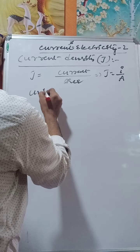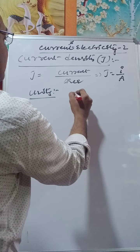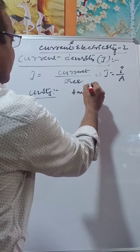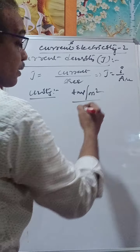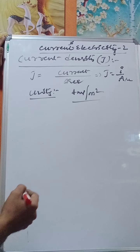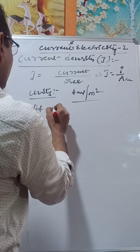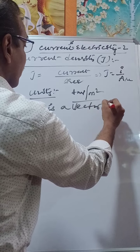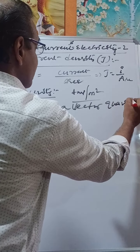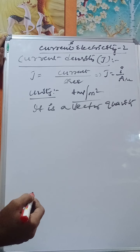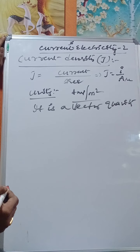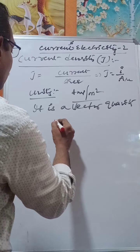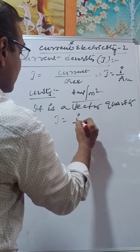The units of current density are ampere per meter square, since current is in amperes and area is in meter square. Importantly, current density is a vector quantity, whereas current — as we discussed yesterday — is a scalar quantity.